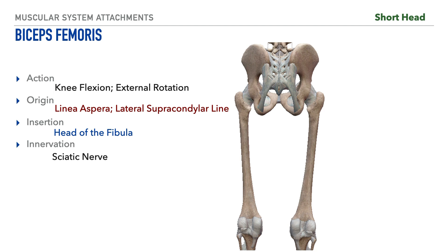First up we'll start with the biceps femoris. It's important to notice the prefix 'bi,' which means two, indicating that we have two components to this muscle: the long head and the short head. Starting with the short head, which is deep to the long head, the action is knee flexion and external rotation. Its origin is on the linea aspera and the lateral supracondylar line, its insertion is on the head of the fibula, and its innervation is the sciatic nerve.